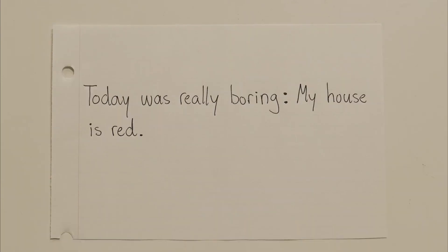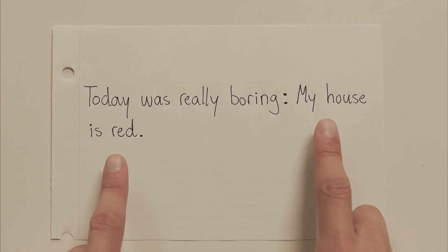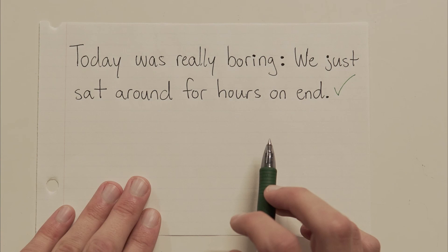Last one. Today was really boring: My house is red. What do you think? Well, this one should be pretty obvious. At first glance, it looks the part. You've got a sentence before the colon. And you've got more stuff after the colon that's kind of extra information. The problem is, the stuff after the colon has nothing to do with the stuff before the colon. So, it can't really be considered extra information. For this to have worked, we would have needed to describe how the day was boring. But saying, my house is red, has nothing to do with the day being boring. So, this sentence does not work. Maybe if we rewrote it like this, it would be fine. Today was really boring: We just sat around for hours on end. I don't know. This way, we're actually giving more information about the day.